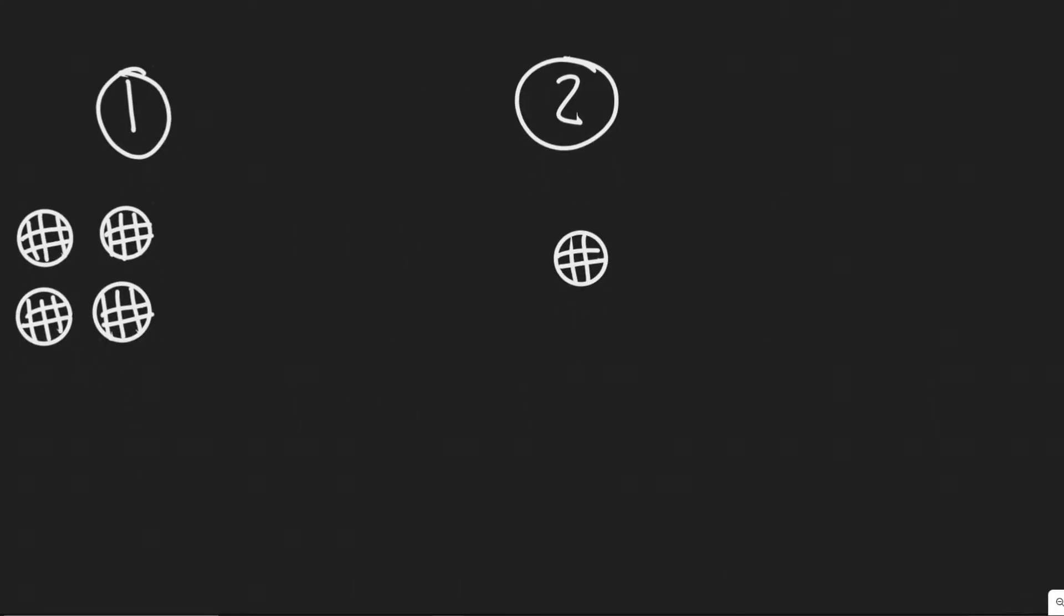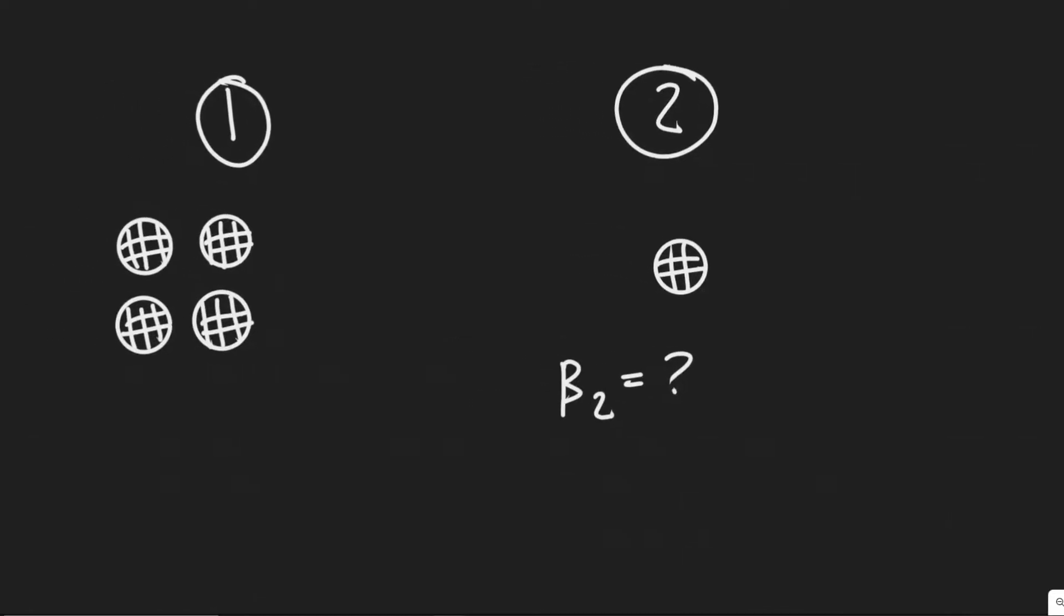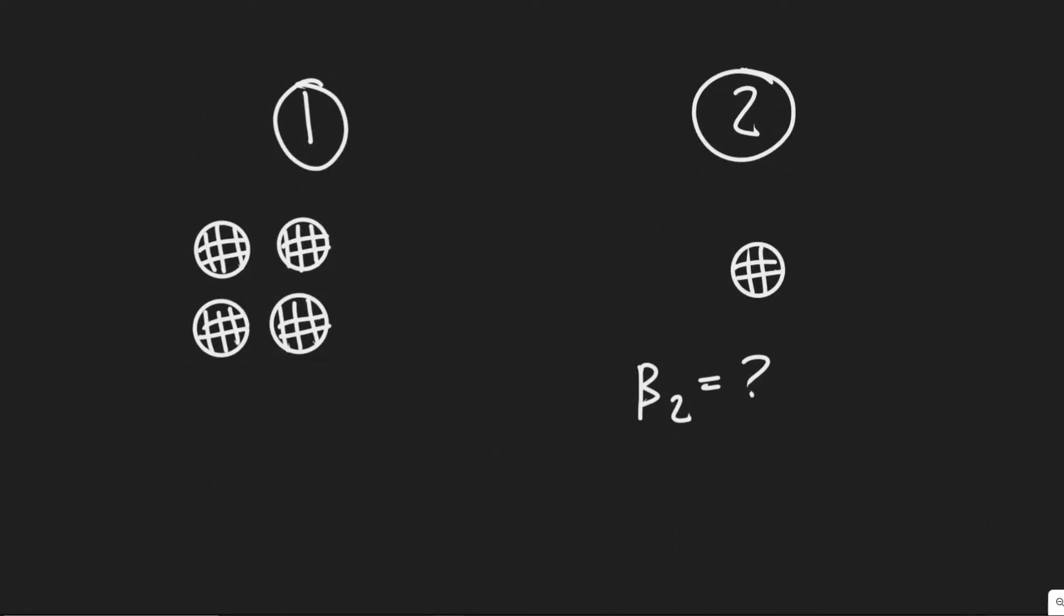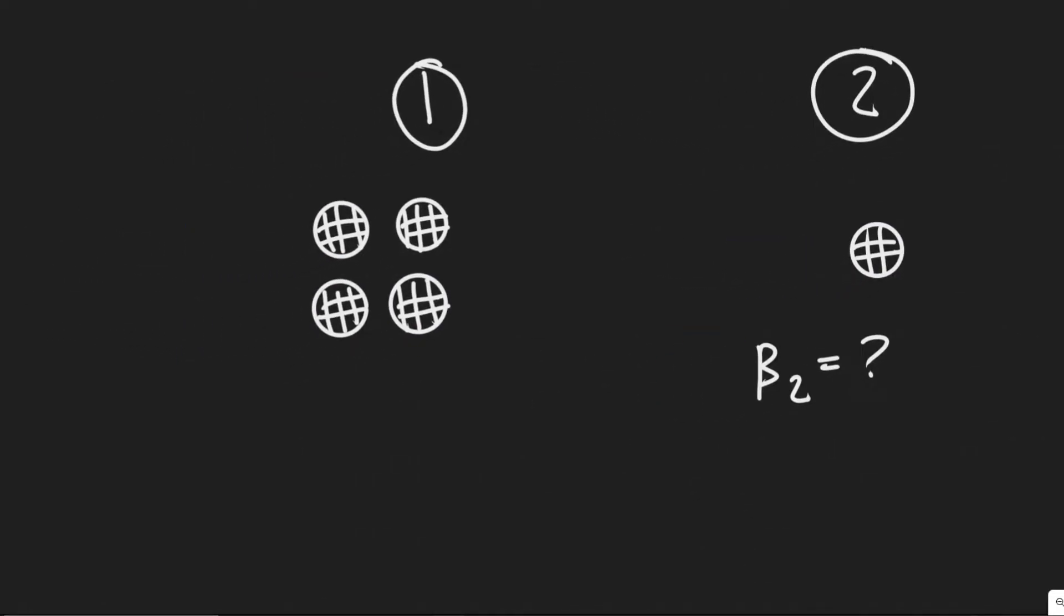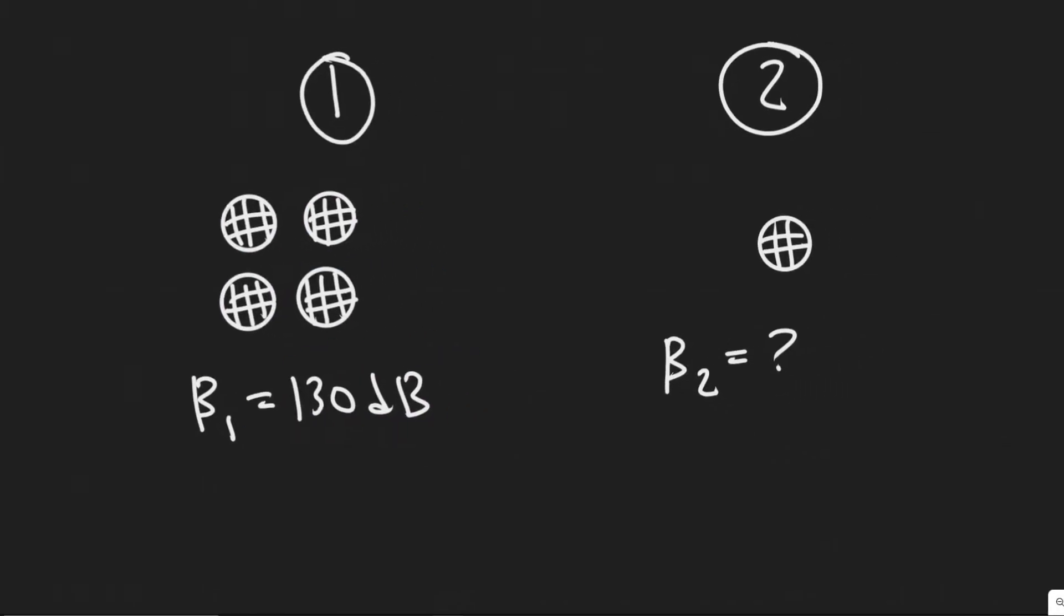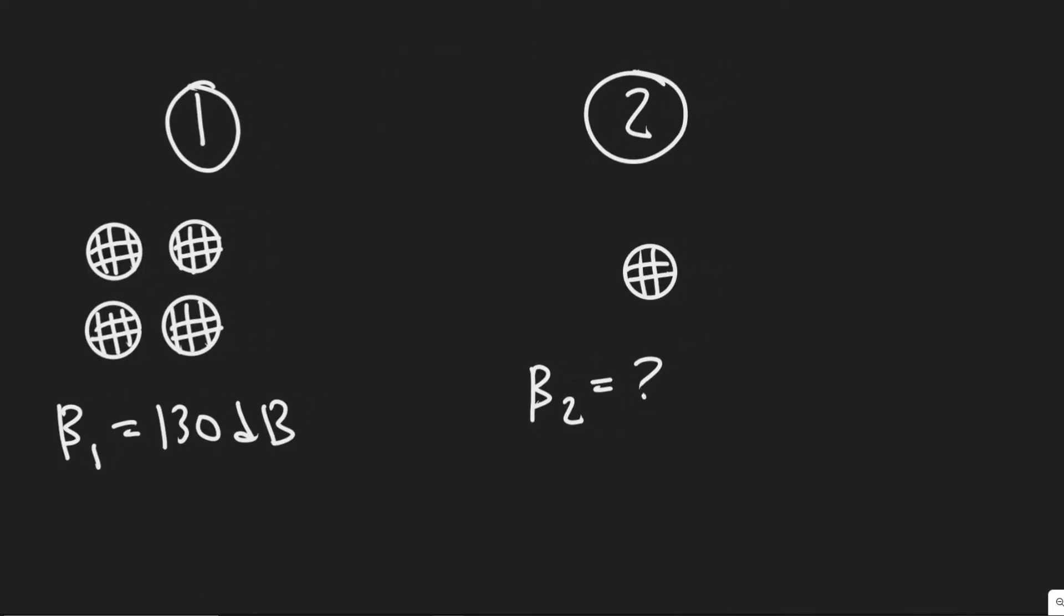So what we're trying to find is the sound level beta, we'll call it β₂ for just this one jet engine going. We're given that four of the jet engines, if they all go at once, the sound level is equal to 130 decibels. So we're given four create a sound level of 130 and we're trying to find the sound level if just one of them is going.